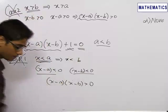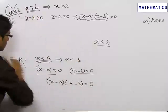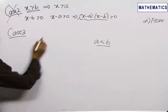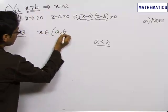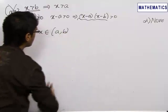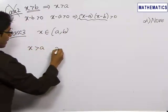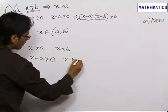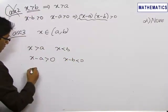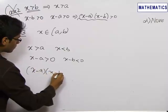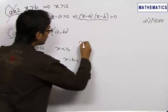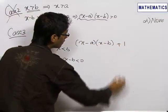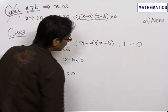So, x cannot be greater than b — this case is also rejected. We now take the third case, which is the only case left: x lies in the interval a to b. Since x is greater than a and less than b, x minus a would be greater than 0 and x minus b would be less than 0. So their product x minus a into x minus b would be less than 0, and a negative quantity added to 1 can definitely lead the whole equation to equal 0.